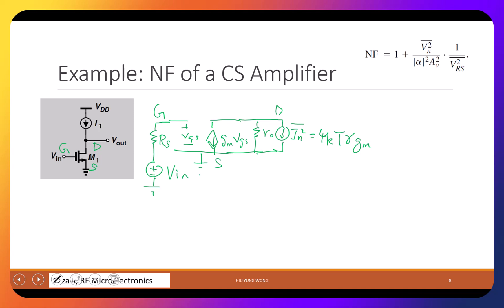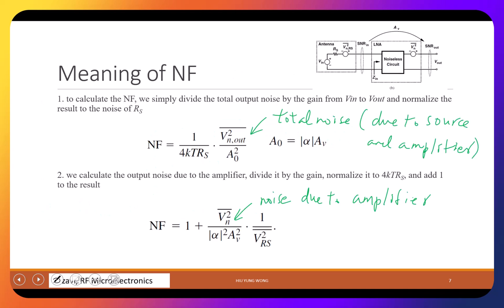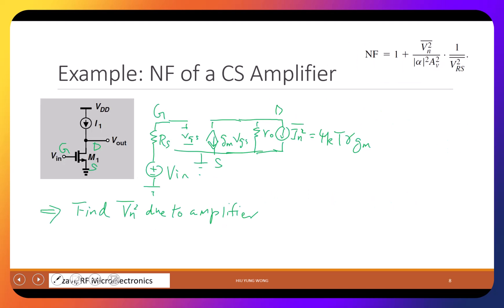I want to find VN² due to the amplifier. The noise is inside the circuit — I want to refer it to the output, then claim the circuit is noiseless, and use the noise figure equation I've learned. To do this, I will short the input.